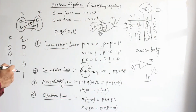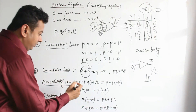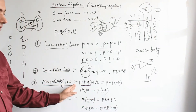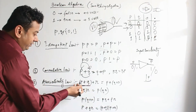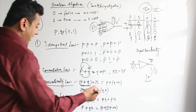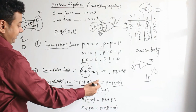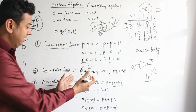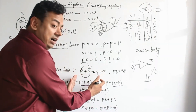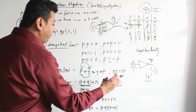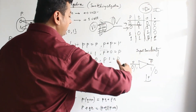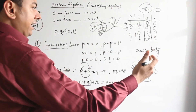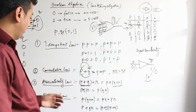Associative law: if you start OR-ing from the left — (P + Q) + R — you first evaluate P and Q, then OR the result with R. If you go from the right — P + (Q + R) — you evaluate Q and R first, then OR with P. Associative law says the result is the same whether you follow left or right associativity: (P + Q) + R = P + (Q + R). The same holds for AND.